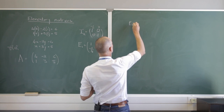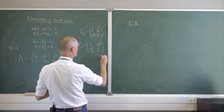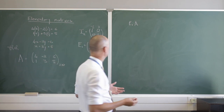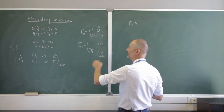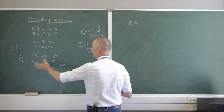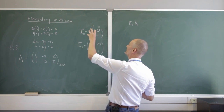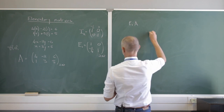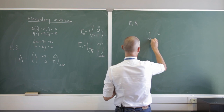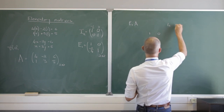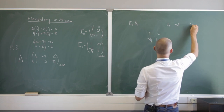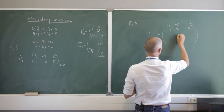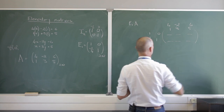Let's compute E1 times A. E1 is 2×2 and A is 2×3, so 2×2 times 2×3 gives a 2×3 matrix — this is exactly what we are doing when we perform elementary row operations. Elementary matrices start with the identity matrix and we apply an elementary row operation to it. So we have [1, 0; -1/4, 1] multiplied by [4, -2, 6; 1, 3, 5].